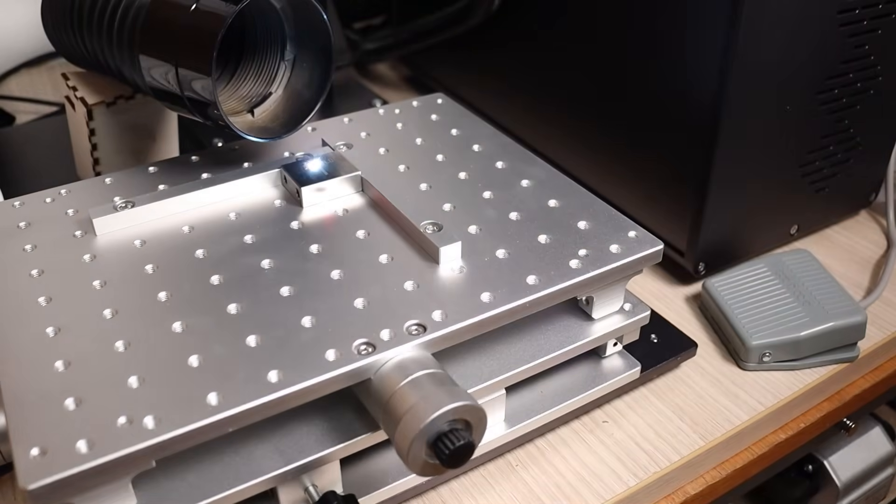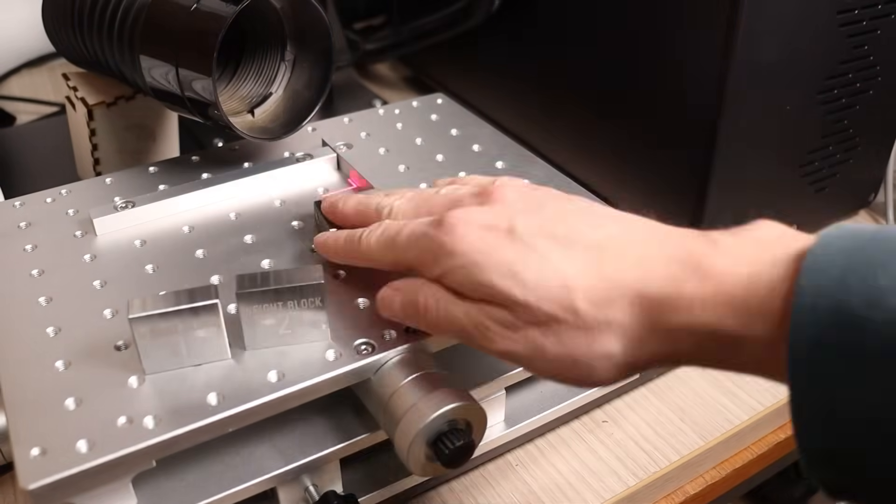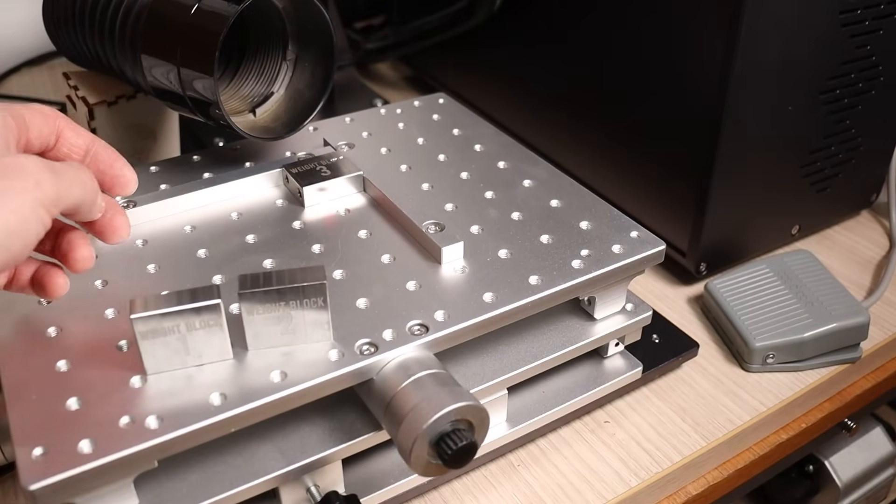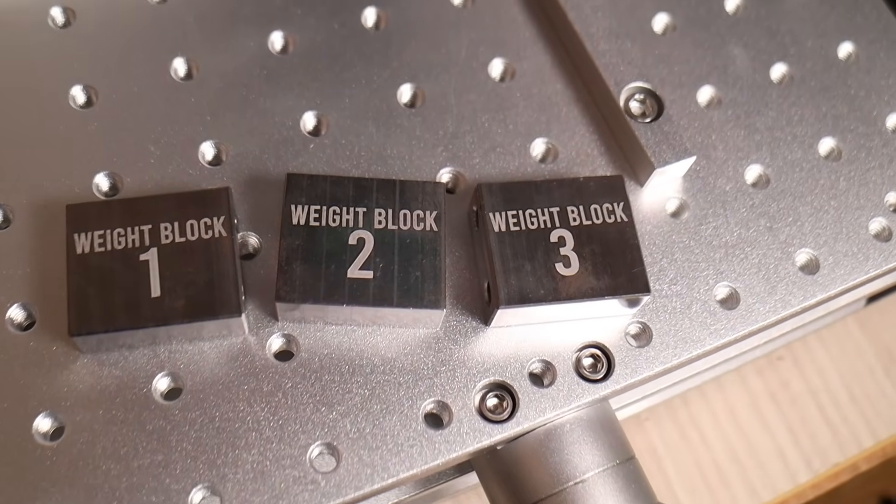Once positioned, just press the foot pedal to engrave the first part. Then, swap in the next piece and the serial number automatically increments. This setup makes batch engraving significantly more efficient.